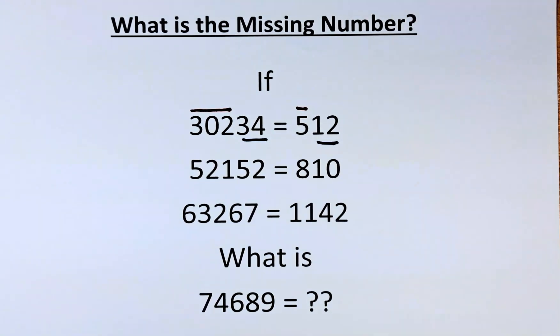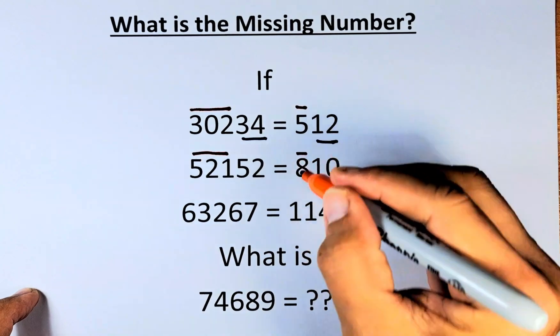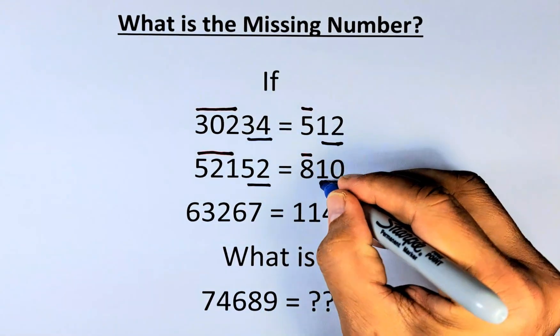Similarly, in the second row, if you add 5 plus 2 plus 1, that will give you 8. And then when you multiply 5 by 2, it will give you 10.